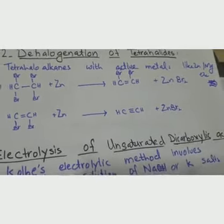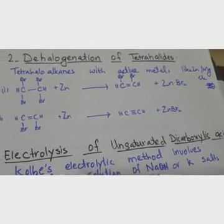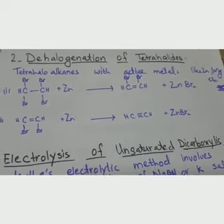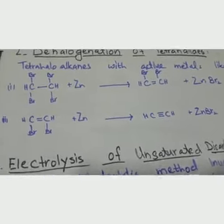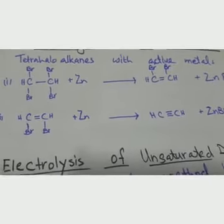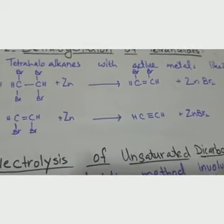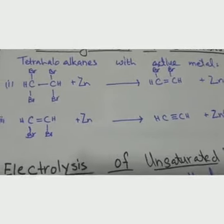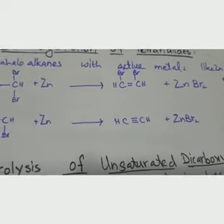Tetra haloalkanes are treated with active metals — highly electropositive metals such as zinc or magnesium. There are 4 bromo groups total — 2 on each adjacent carbon. When treated with zinc, one bromo group is removed from each carbon, forming zinc bromide and a double bond between the carbons. Then the remaining two bromides on the adjacent carbons are removed in the presence of zinc, giving a triple bond between the two carbons.